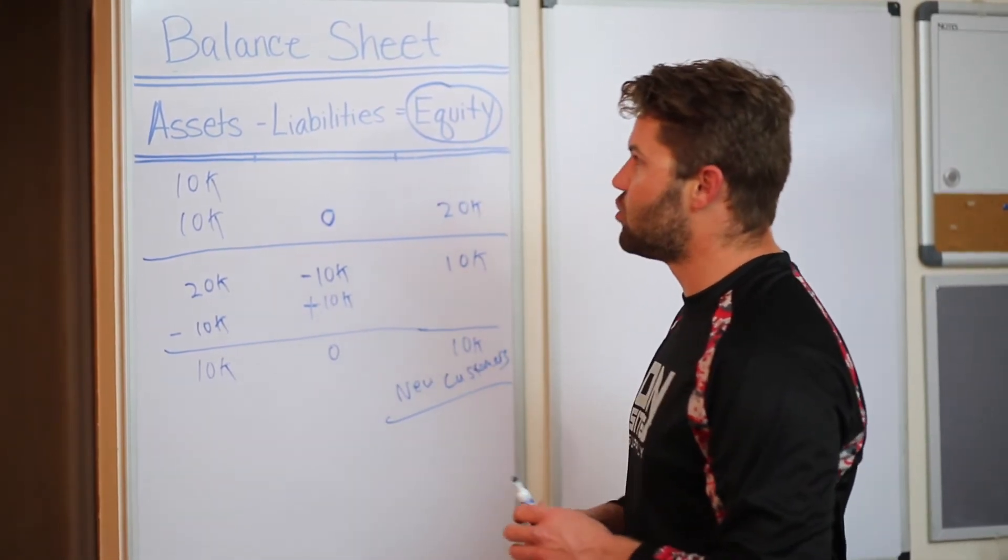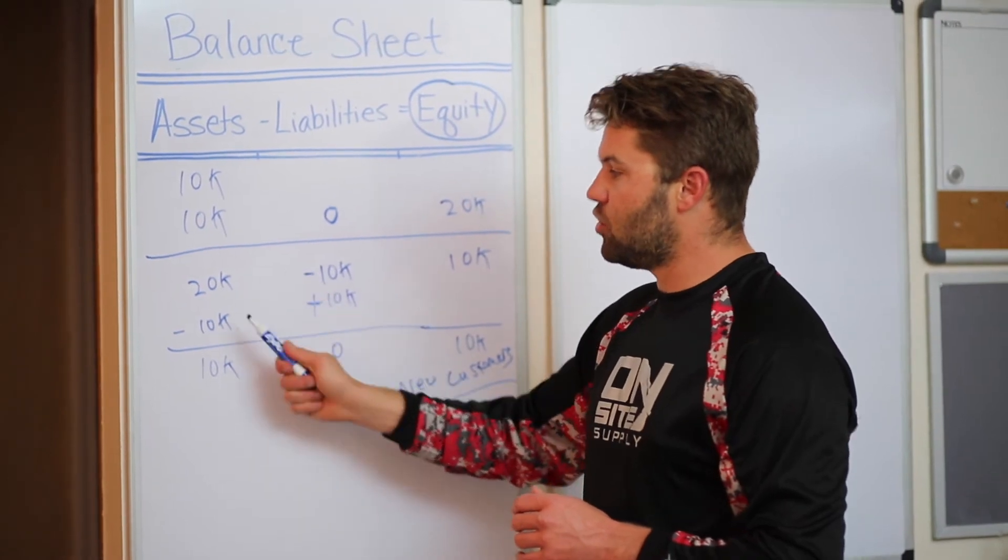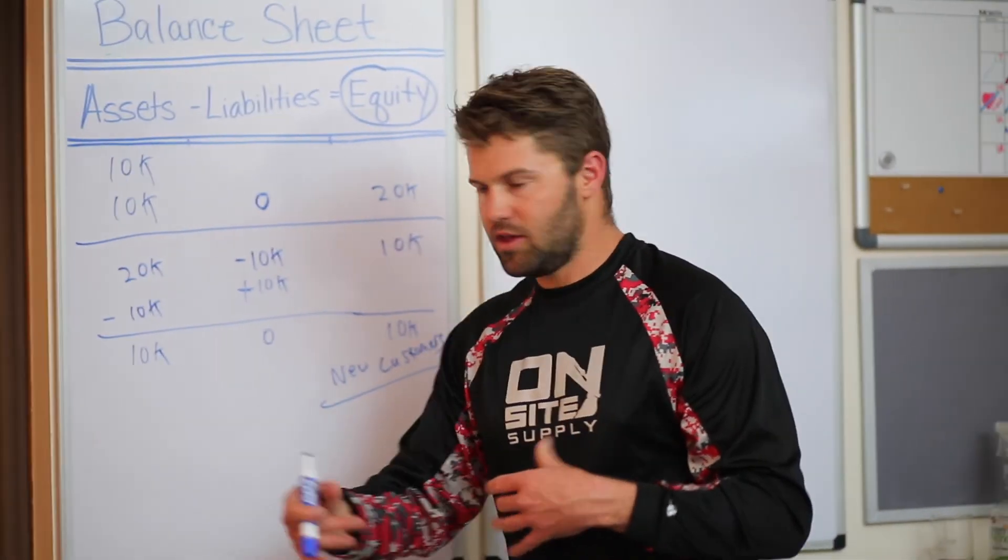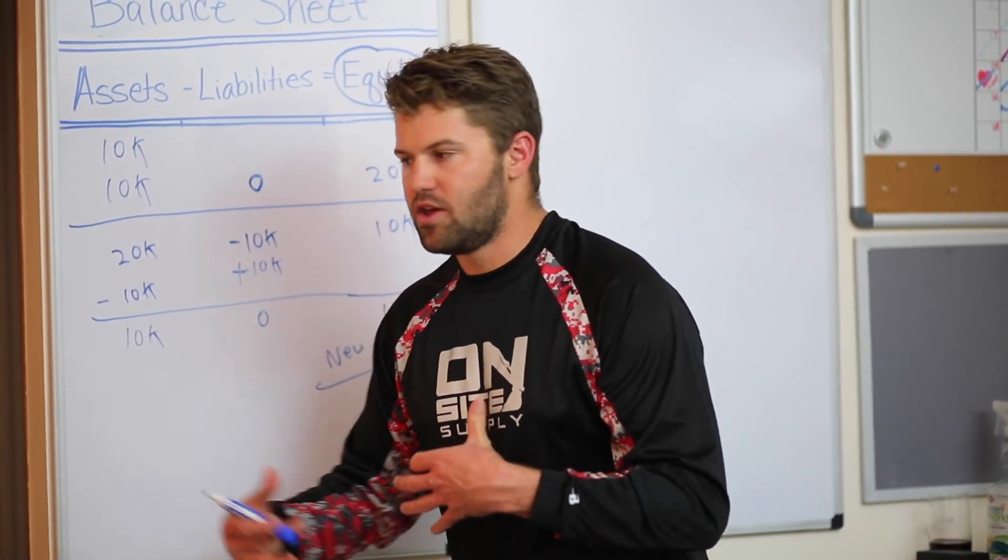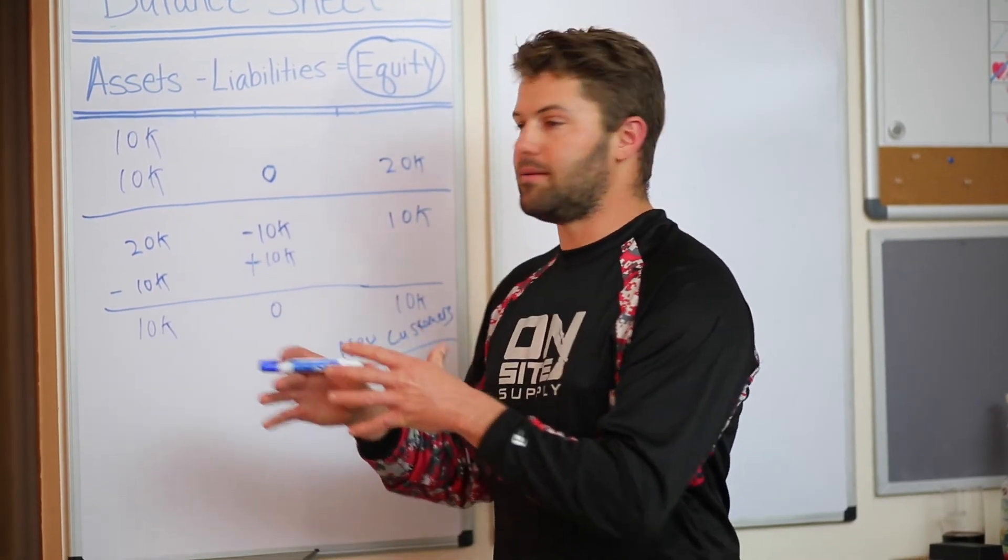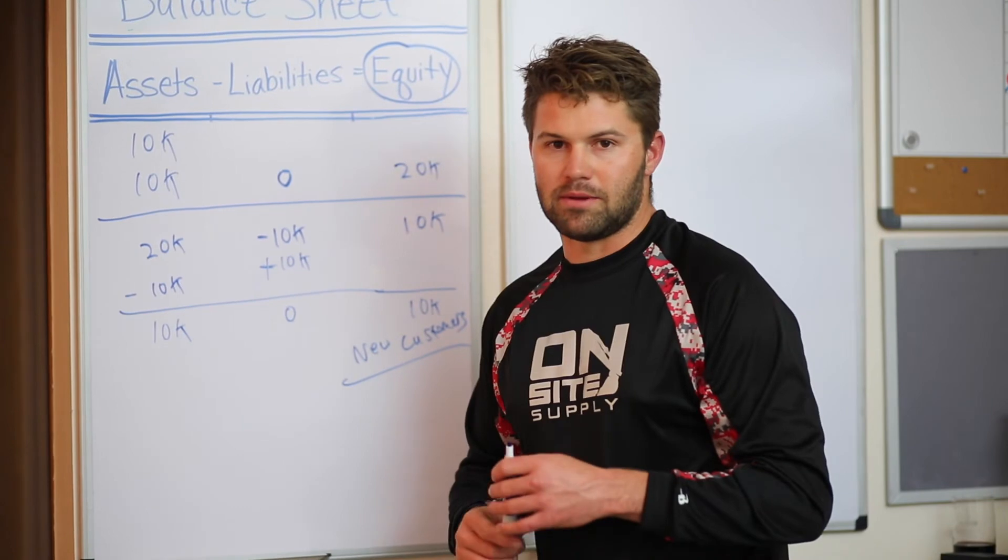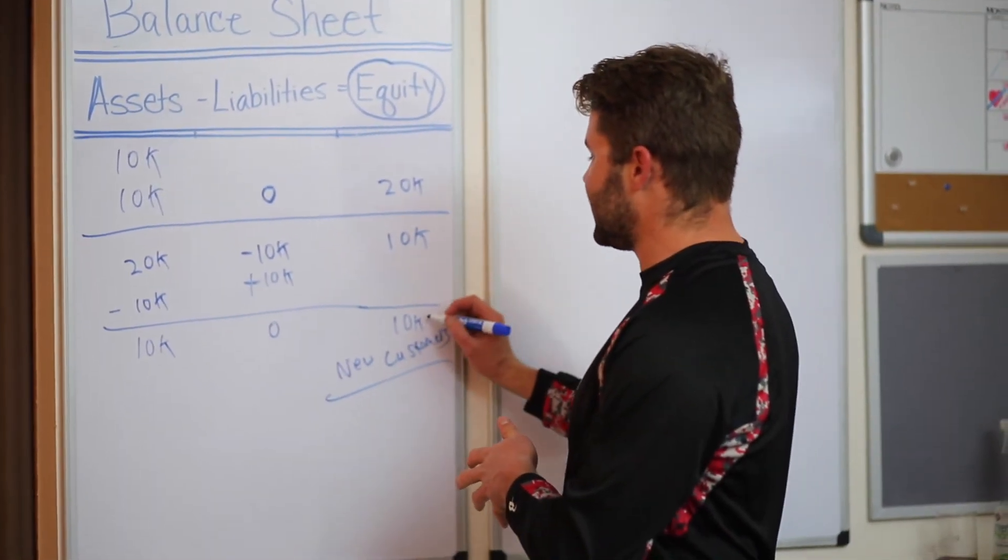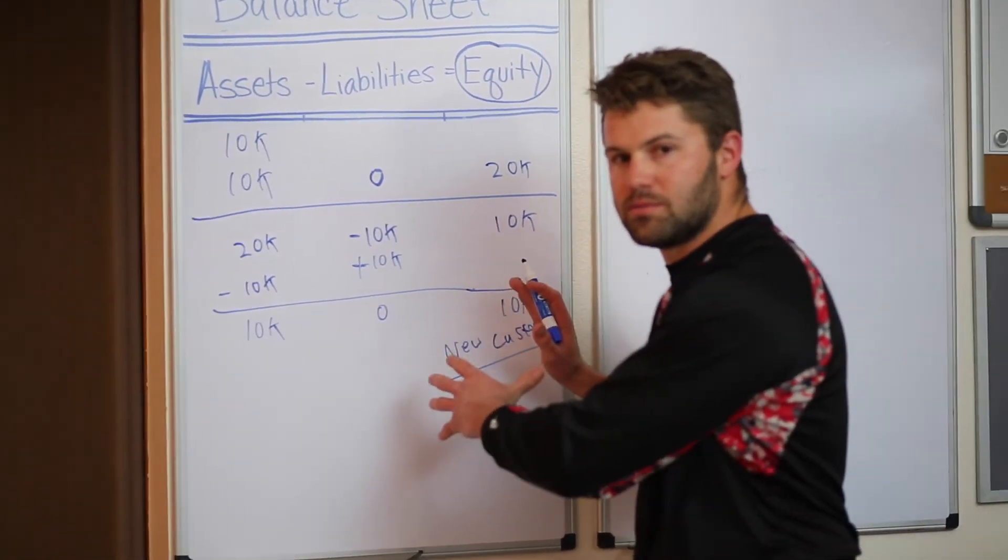In theory you could have taken the business that you were purchasing and worked some sort of extended payment deal where you paid this guy his $10,000 in 60 days or 90 days. That would have given you time to liquidate the equipment and pay off the down payment. And so now what we've done is we've gotten $10,000 in goodwill, $10,000 in new customers.